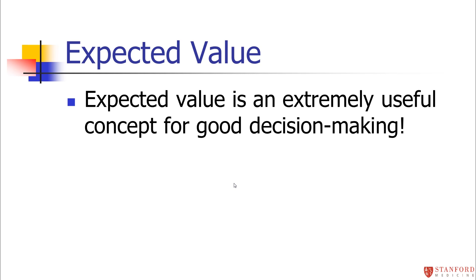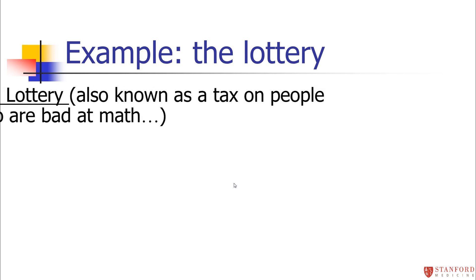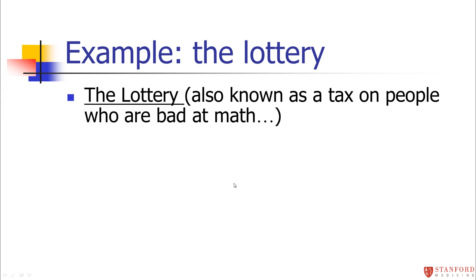Expected value is an extremely useful concept for good decision making. Let's go back to the lottery example we started to talk about last week. The lottery has also been called a tax on people who are bad at math, and I tend to agree with that viewpoint. I'm not saying lotteries are bad — most lotteries send some revenue to pay for things like schools and parks — but if you do out the math, the lottery is not really a great deal.